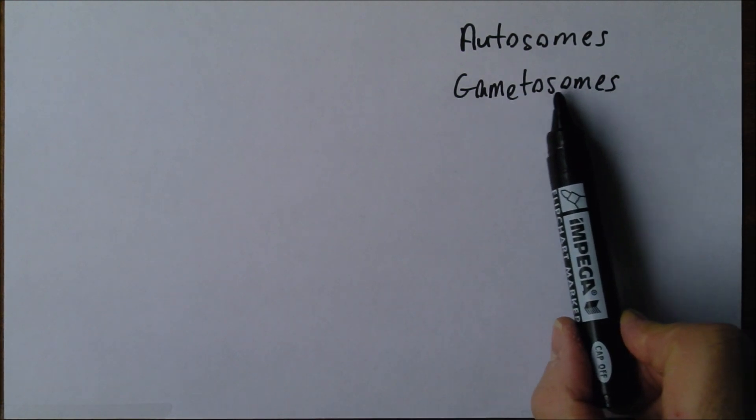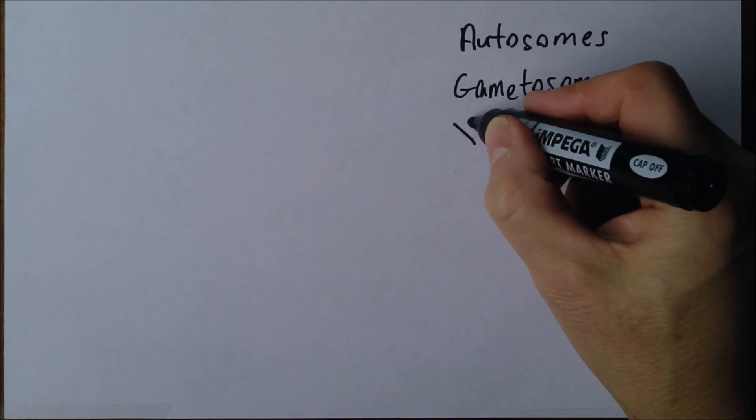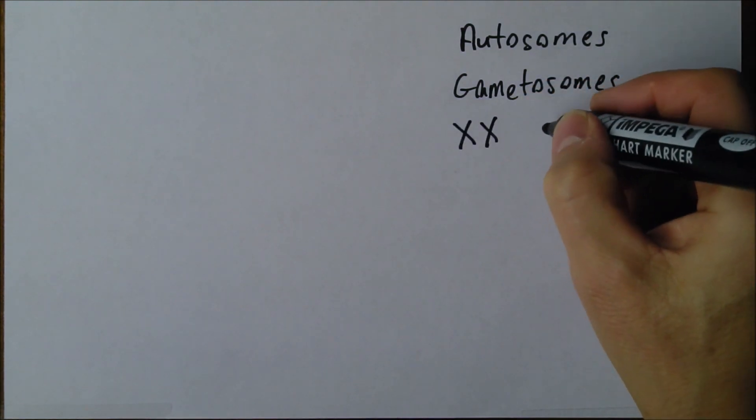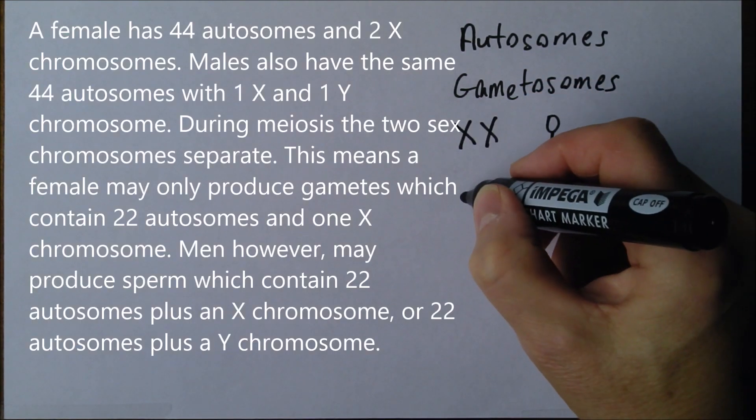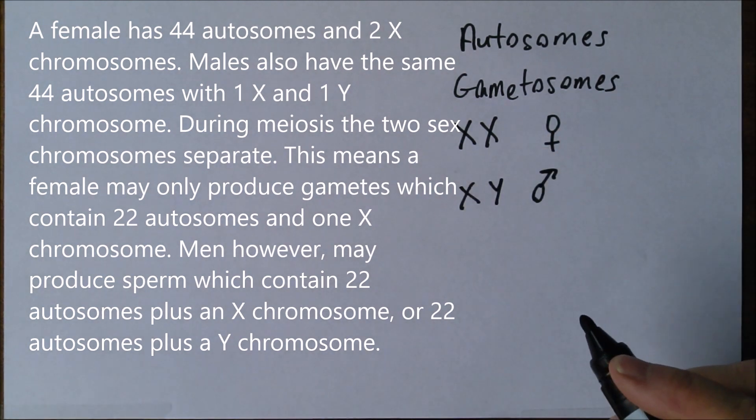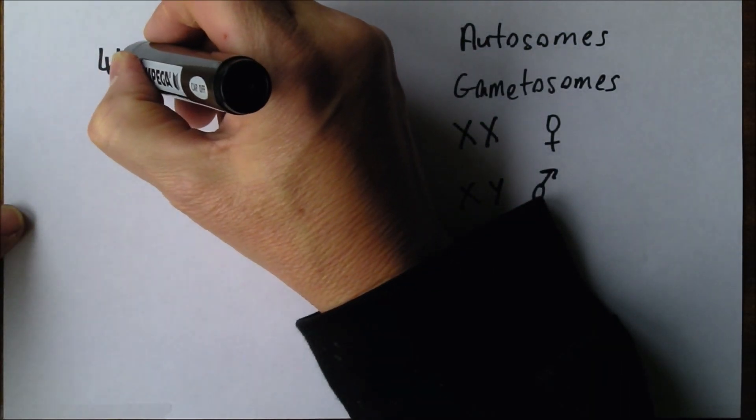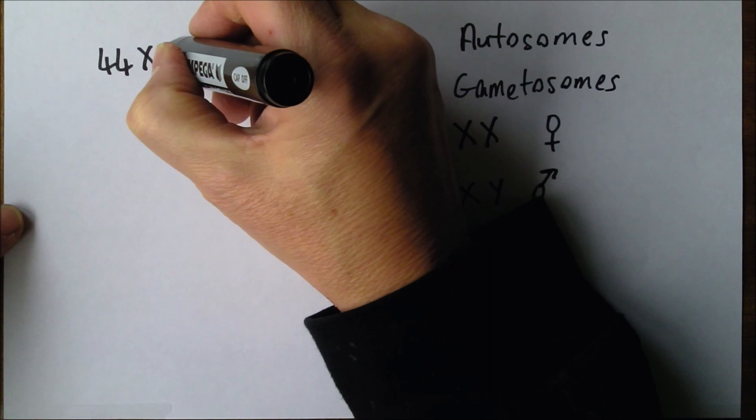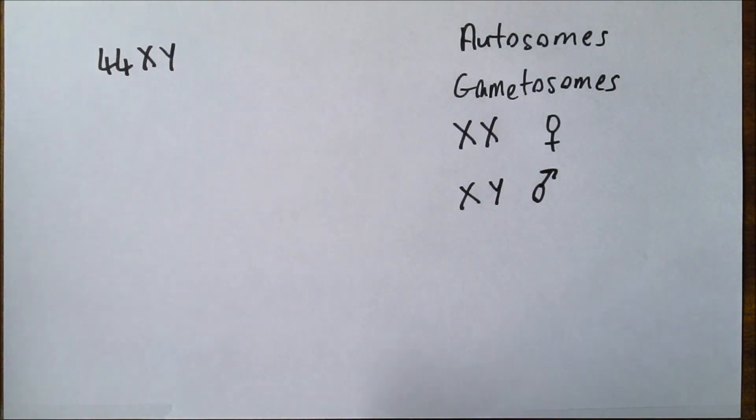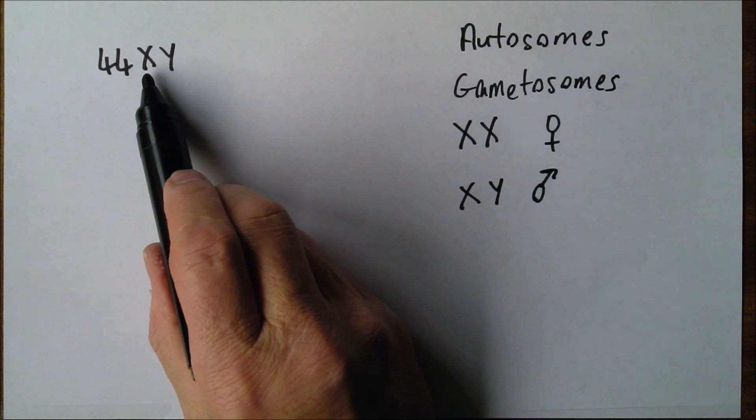Now the gametosomes are the sex chromosomes. XX is going to be a female, XY is going to be a male. So a man is going to be 44 with an X and a Y. In other words, a man has 44 autosomes and his gametosomes are X and Y.